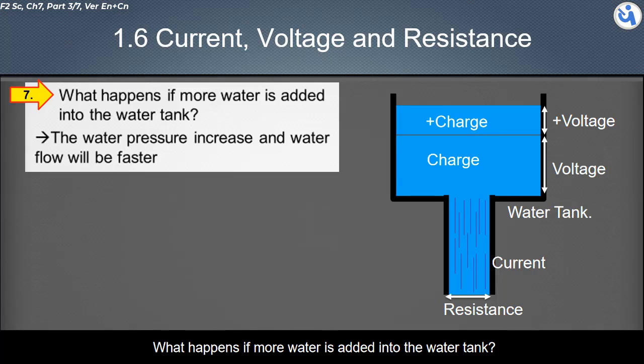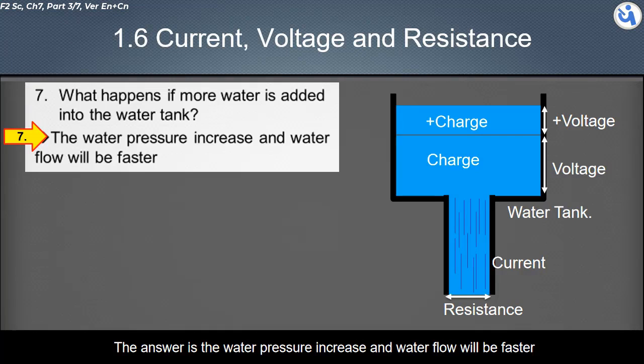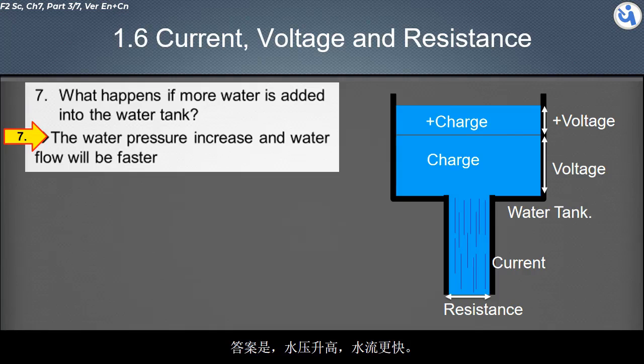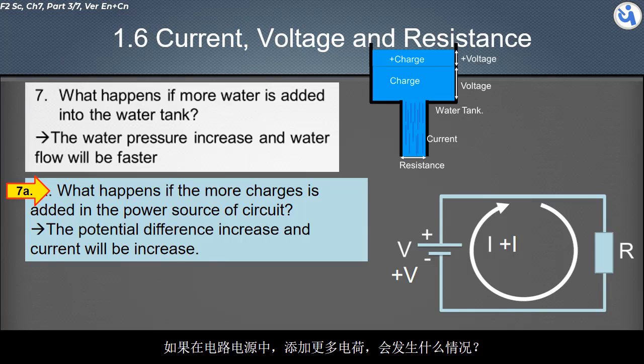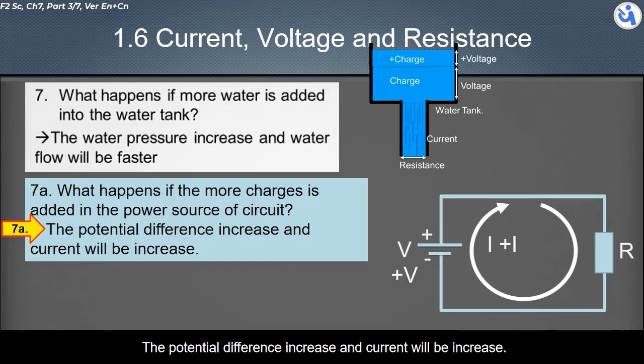What happens if more water is added into the water tank? The water pressure increases, and water flow will be faster. What happens if more charges are added in the power source of the circuit? The potential difference increases, and current will increase.